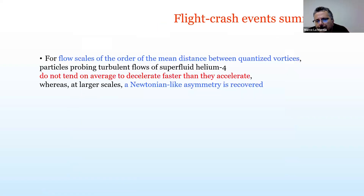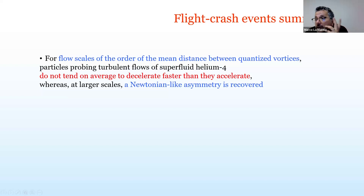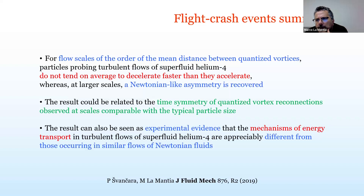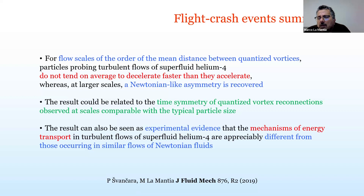The main experimental observation is that particles in turbulent flows of superfluid helium 4 do not tend, on average, to decelerate faster than they accelerate. One explanation given in our paper is that the particles are too large to probe the scales at which the asymmetry would be observed. There are also older experiments showing that quantized vortex reconnection events are expected to be symmetric in flows of superfluid helium 4.